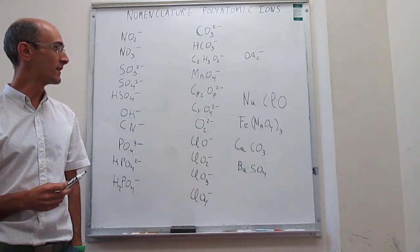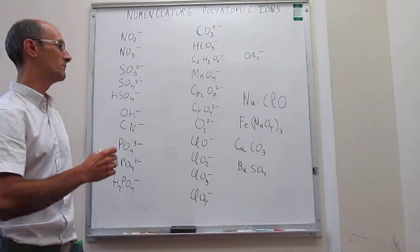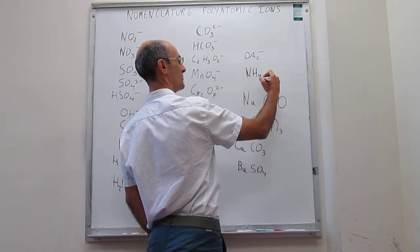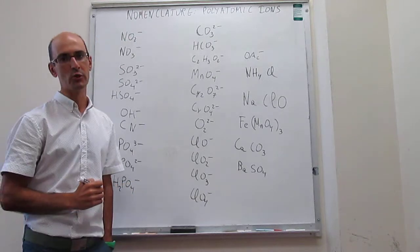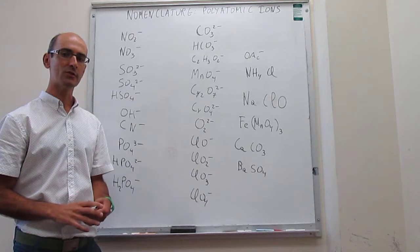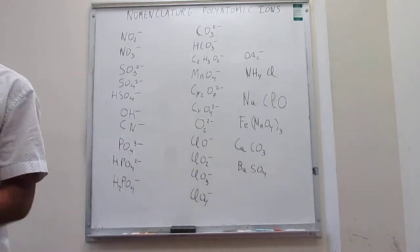Just one final example, we're going to use ammonium so that we can use the only one positive polyatomic ion that we're going to encounter. NH4Cl, that will be called ammonium chloride. So this wraps up the discussion of the naming with polyatomic ions. Thank you.